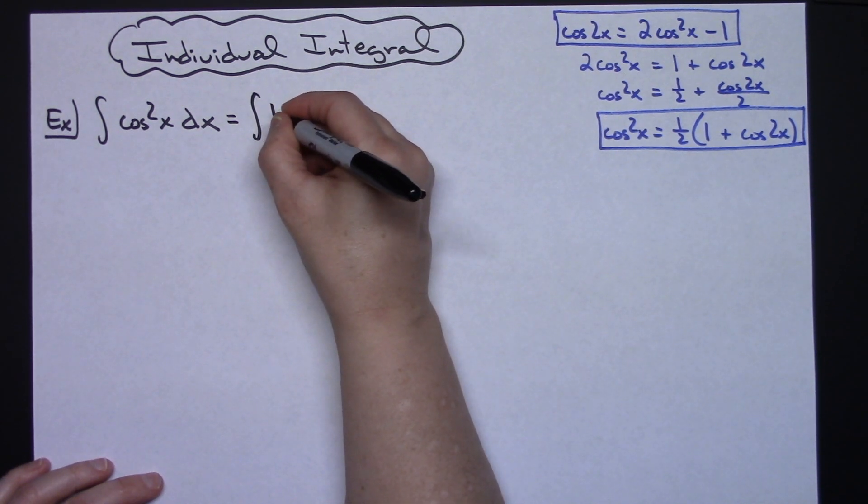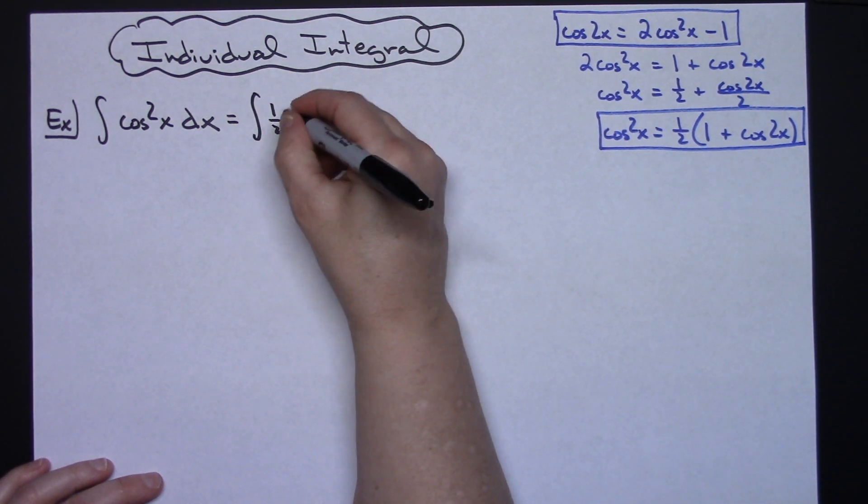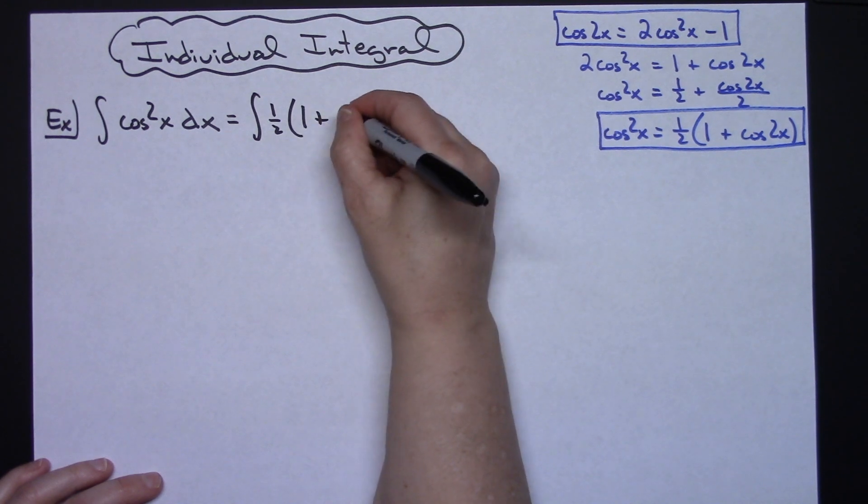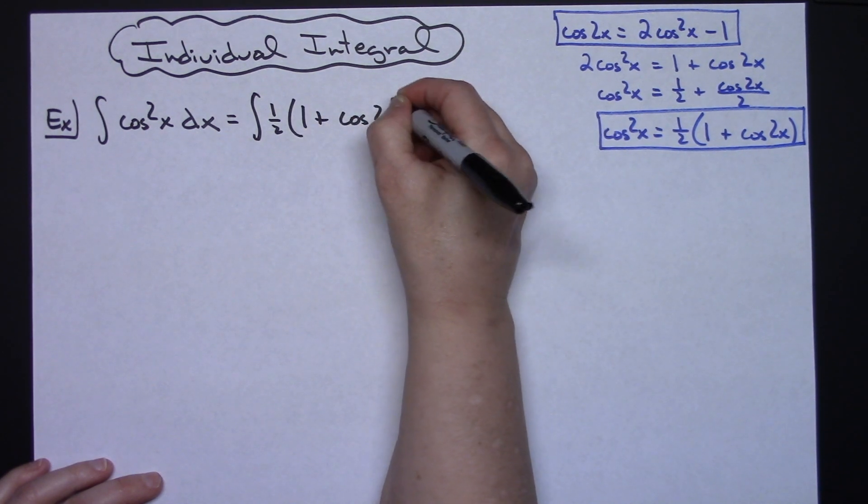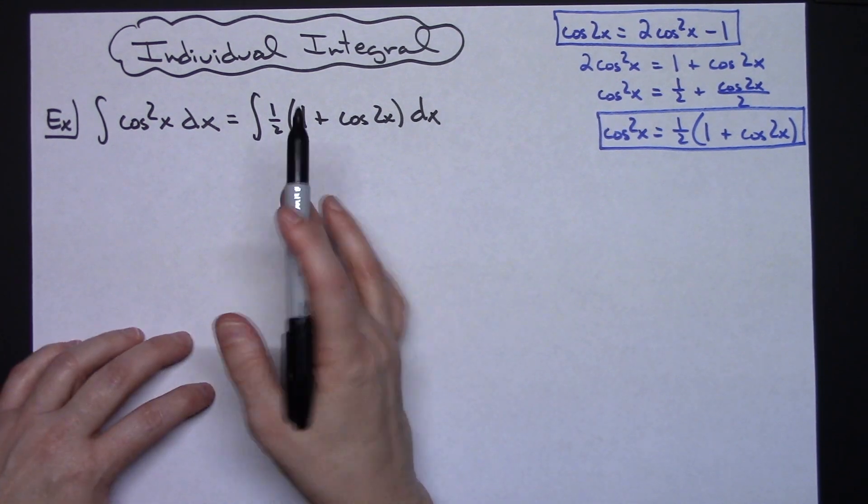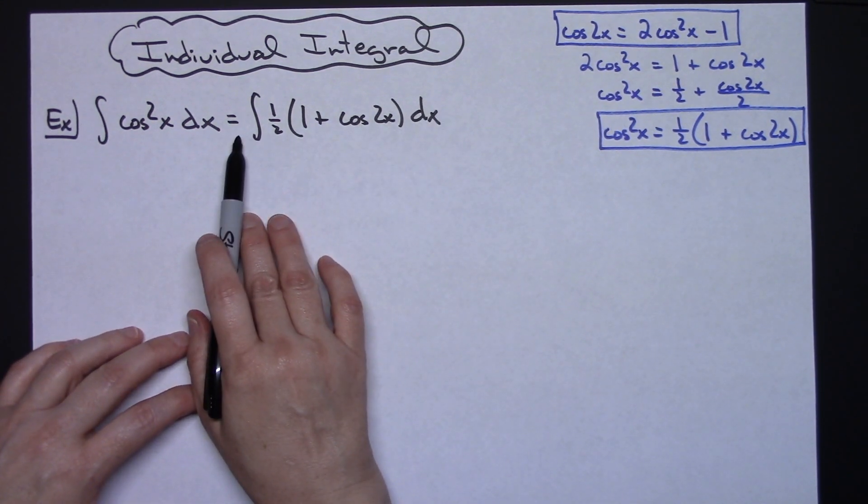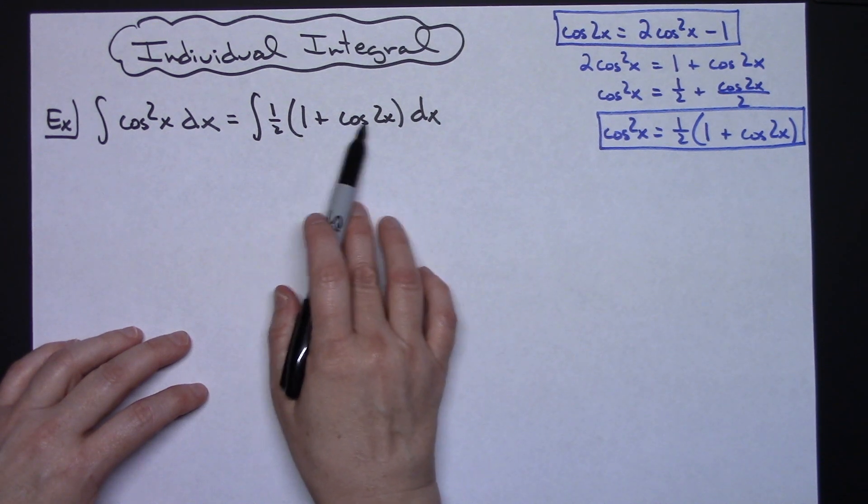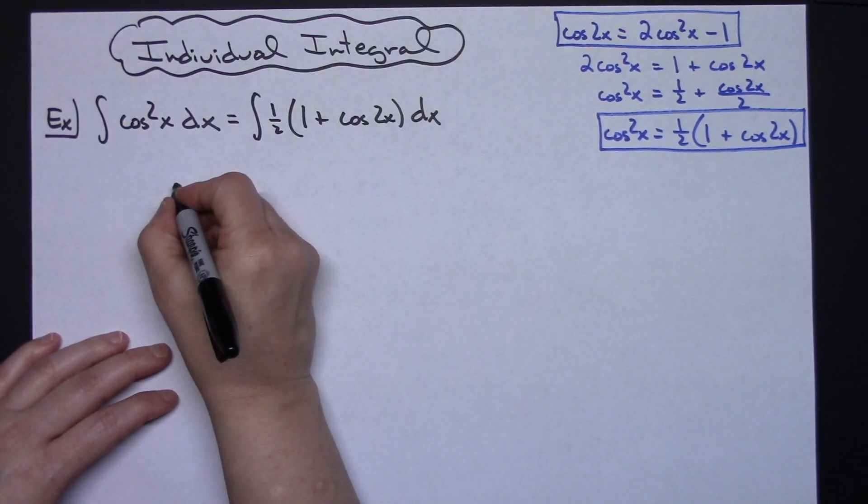So then I'll have the integral of 1 half times the quantity 1 plus cosine 2x dx. I'm going to do this all in the same step. I'm going to pull out the 1 half out in front, and then I'm going to break this up into two individual integrals.